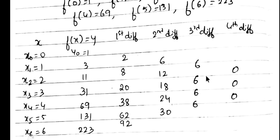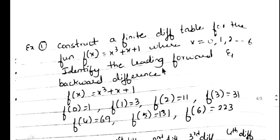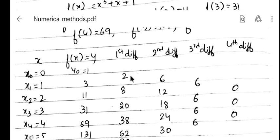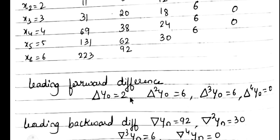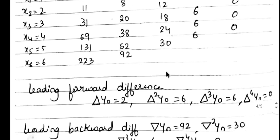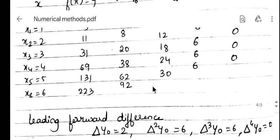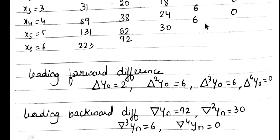Observing the table, values go on decreasing: there were 7 terms, then 6, 5, 4, 3, and finally 0. When we get 0, we stop — performing the fifth difference would also give 0. The leading forward differences are: delta y0 = 2, delta² y0 = 6, delta³ y0 = 6, delta⁴ y0 = 0. The leading backward differences are: backward delta y6 = 92, backward delta² y6 = 30, backward delta³ y6 = 6, backward delta⁴ y6 = 0.